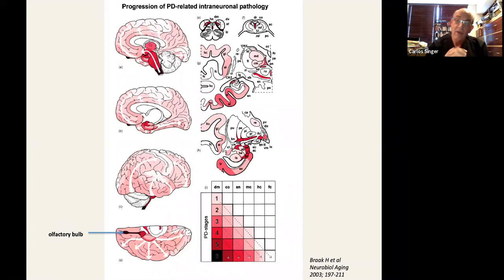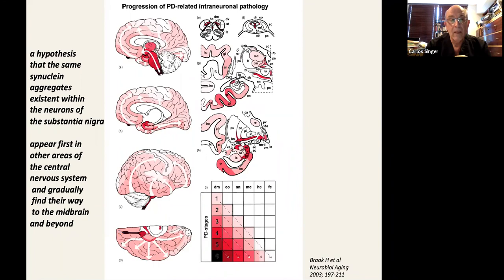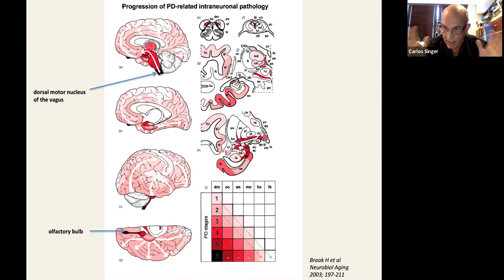And now it's known as stage one of Braak's hypothesis of Braak's staging system. The olfactory bulb and the dorsal motor nucleus of the vagus. Now, that innervates the colon. So, you know, I have an understanding of why it would be that for years before developing motor Parkinson's disease, people would have anosmia and constipation. Not necessarily everybody, but many.